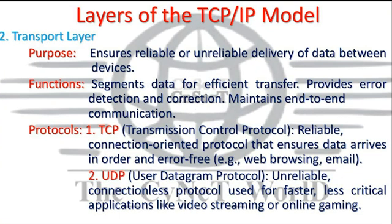Layer 2: Transport Layer. Purpose: Ensures reliable or unreliable delivery of data between devices. Functions: Segments data for efficient transfer, provides error detection and correction, and maintains end-to-end communication. Protocols: TCP (Transmission Control Protocol) — a reliable, connection-oriented protocol that ensures data arrives in order and error-free, e.g., web browsing and email. UDP (User Datagram Protocol) — an unreliable, connectionless protocol used for faster, less critical applications like video streaming or online gaming.